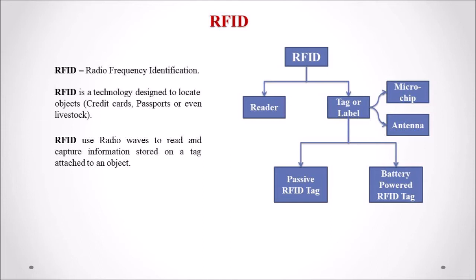There are two types of RFID tags. The passive RFID uses the reader's radio wave energy — it has no inbuilt power supply or battery. It uses the reader's radio wave energy to read stored information and send it back to the reader. The active RFID, also called battery-powered RFID, has a small battery installed in the tag, from which it consumes power to broadcast information.